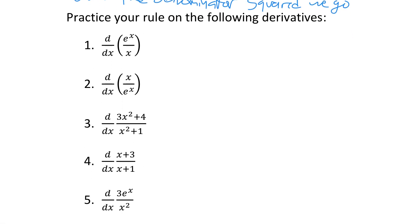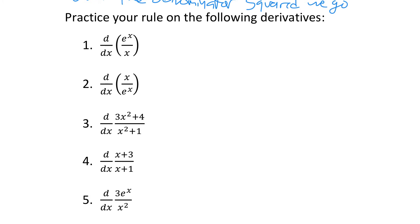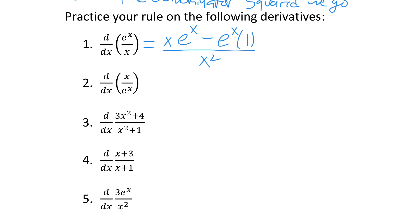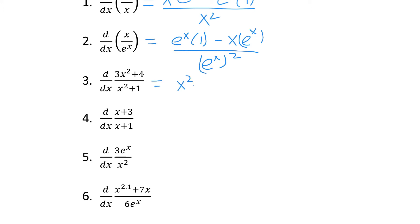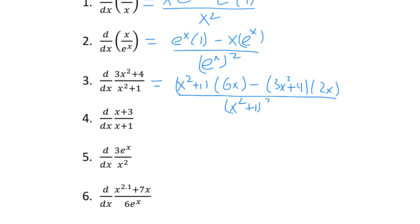Let's sing that song on the first example, e to the x over x. Low — the denominator x — d high means the derivative of e to the x, which is just e to the x. Less means subtraction. High — e to the x — d low — the derivative of x, which is 1 — over the denominator squared. Then try the following examples on your own; pause the video and give them a try. Low d high, less high d low over the denominator squared we go.